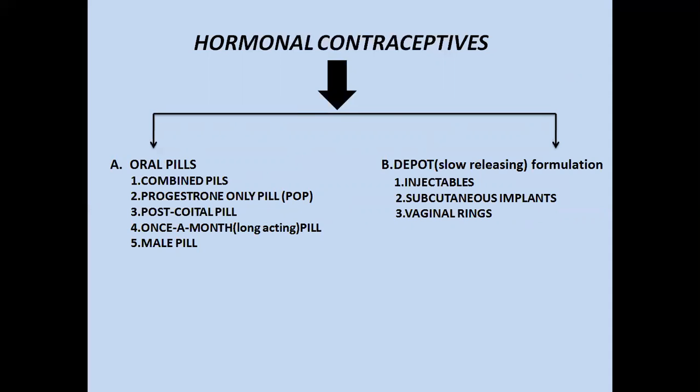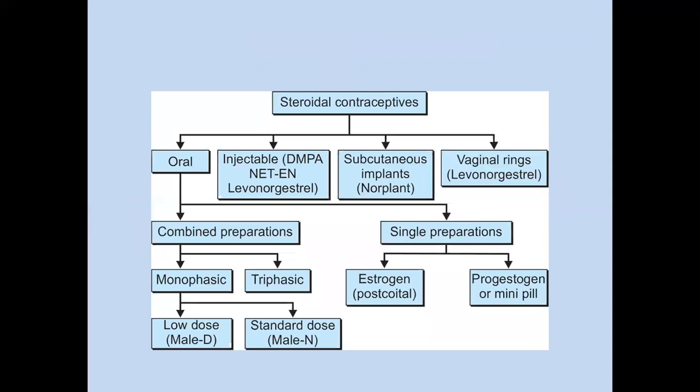The first category is oral pills. In oral pills, the first type is combined pills in which both estrogen and progesterone are present. The second type is progesterone-only pills, abbreviated as POP. The third type is once-a-month pill, and the last one is the male pill. I will discuss each in detail in the next slides.